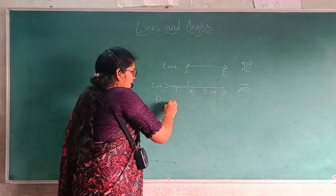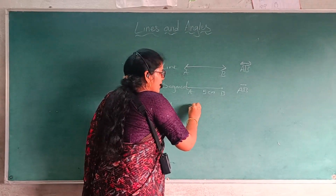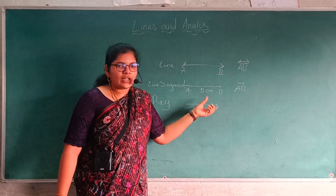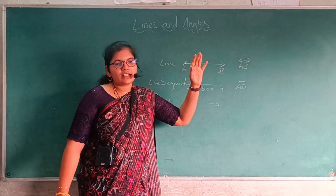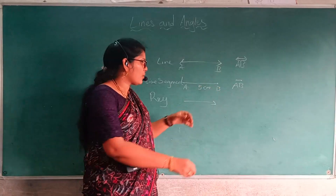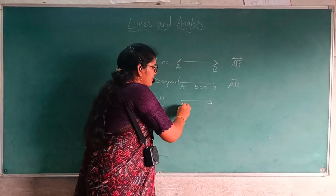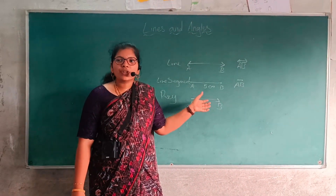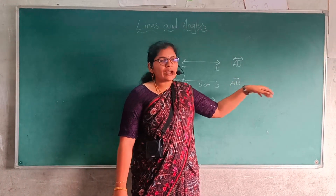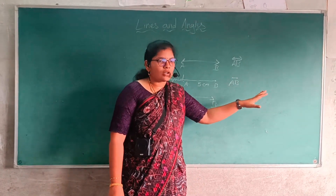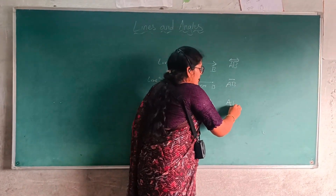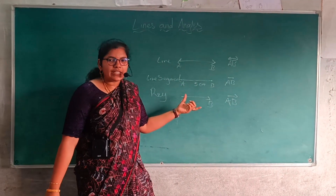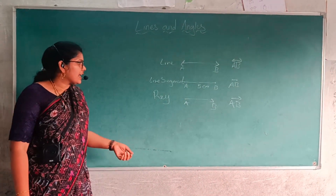Next, what is a ray? A ray starts from a fixed point and on the other side we can extend the line — means and so on. From A to B: A is a fixed point, and from B we can extend that line anywhere we want. It is denoted as ray AB.